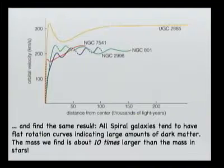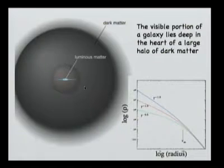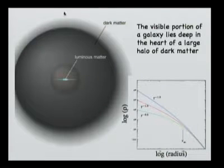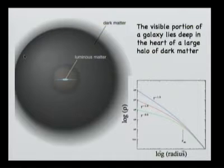That leads us to a model in which the luminous part of the galaxy — we are zooming way out — lives in the center of a much larger galaxy. We only see the luminous matter, but there seems to be a big halo of dark matter in which this luminous matter lives. That halo we can't see — we can't see it in any part of the spectrum. So that's the evidence for the existence of dark matter in galaxies. It's observed in all spiral galaxies.